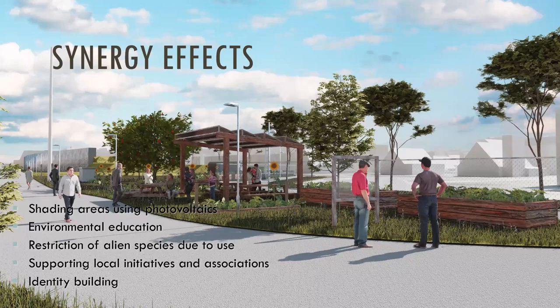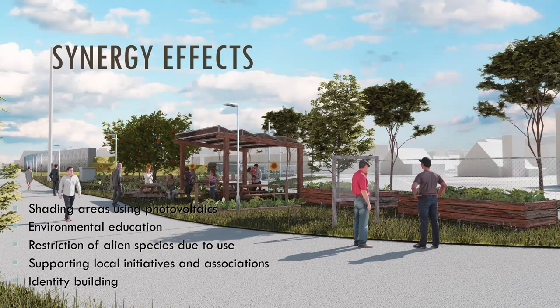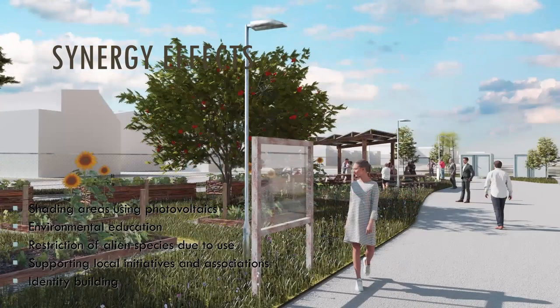Here is a case study — we went to a specific site identified using GIS data as suitable in Vienna. We also found synergy effects like shading using PV installations, which produce energy people can then use for watering or site maintenance. There are aspects of environmental education — information panels about bees in the city or species that support biodiversity — and restriction of alien species through maintenance, as well as supporting local initiatives and identity building.